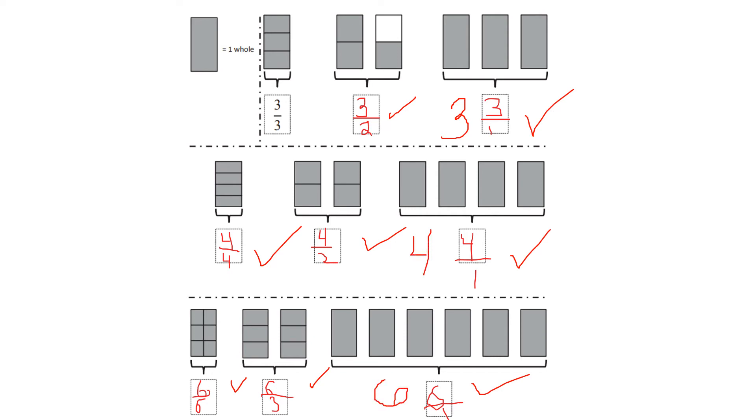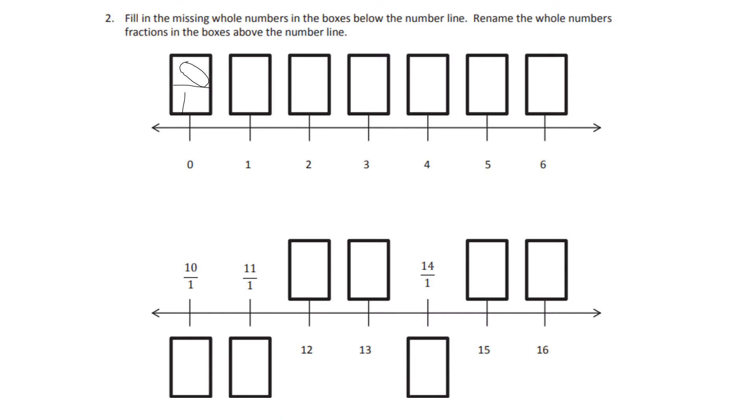So let's keep going. Within this next problem what we're going to be doing is filling in the missing whole numbers in the boxes below on the number line and renaming the whole numbers as fractions in the boxes above the number line. So as you can see I did this first one for us, so it gives us our whole numbers down here so it has zero so I put zero over one. Now over here we have ten over one, so what's this going to be? It's going to be a ten. So I want you to work on these next problems.